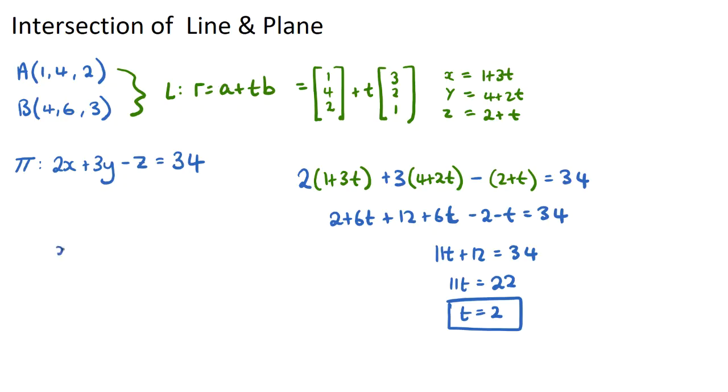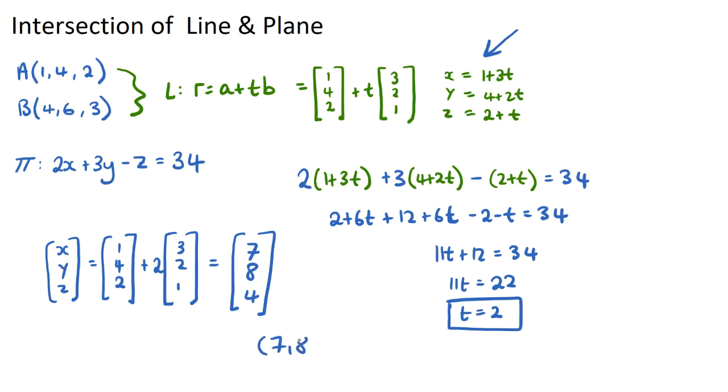So if we go back to our x, y, and z, which was our equation, it will be [1, 4, 2] plus t, which was 2, times [3, 2, 1]. What we'll end up getting is our x, y, z will be 1 plus 6, so 7; 4 plus 2 times 2, so 8; and 2 plus 2 times 1, so 4. So this will be the position vector of where the intersection takes place, and the coordinate would just be (7, 8, 4).